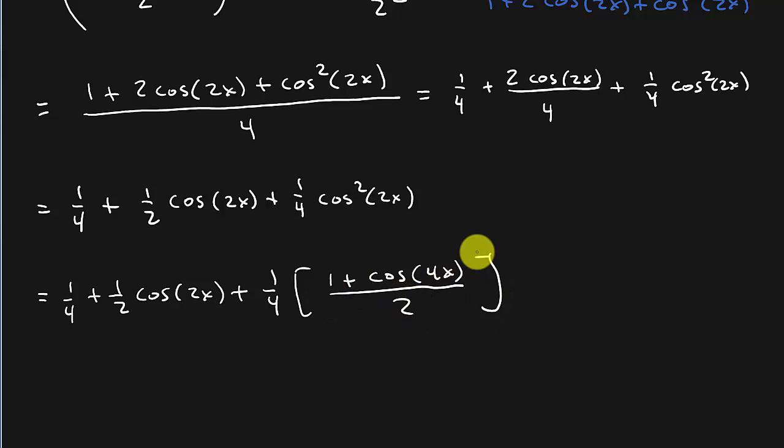So that's going to be 1 plus cosine 4x over 2. All right. So remember, the formula says that cosine squared theta is equal to 1 plus cosine 2 theta over 2. So you see, whatever your angle is here, you have to double it here. And see, since our angle was 2x, we've got to do 2 times 2x, and that's where that 4x comes from.